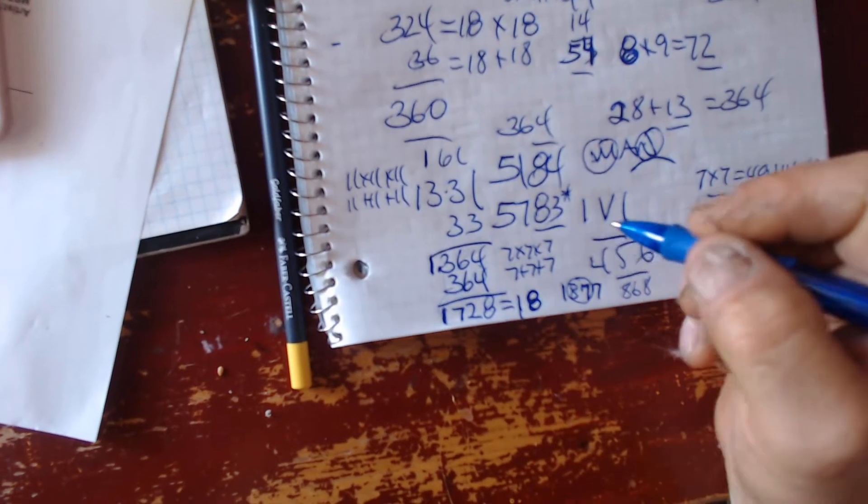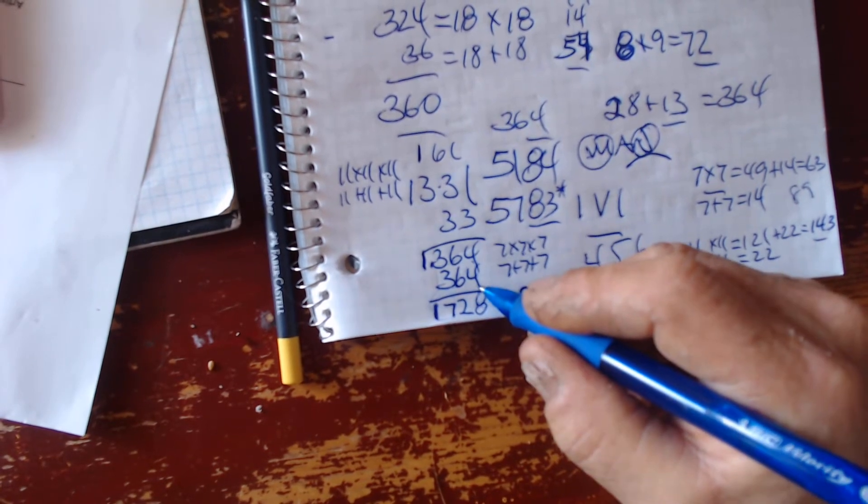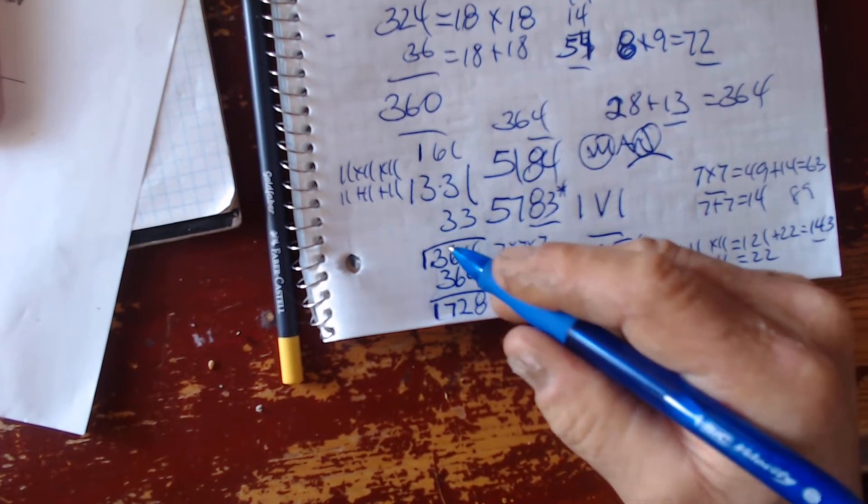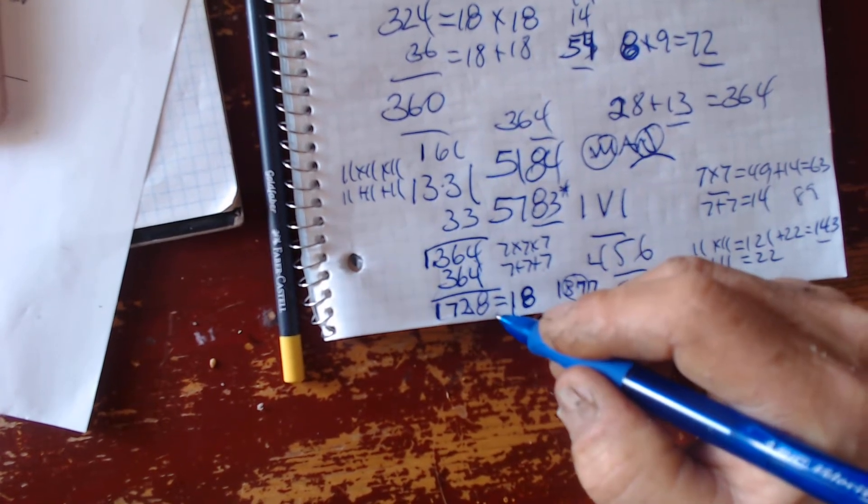The reverse of that is seven, multiply in addition, equaling to three, sixty-four, equaling to eight, equaling to two, twelve, one and two, and one is seventeen, twenty-eight.